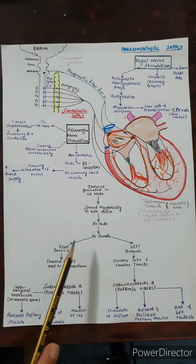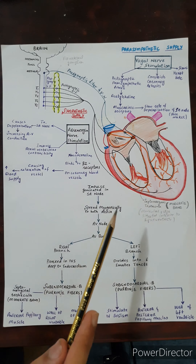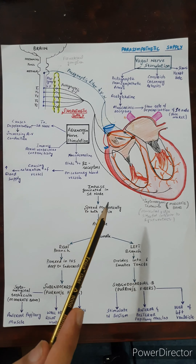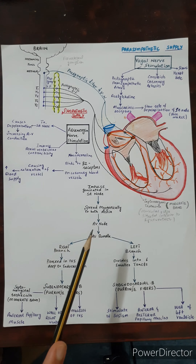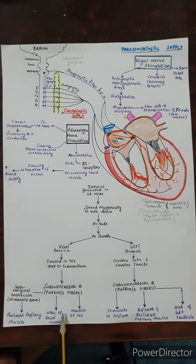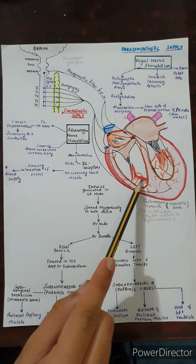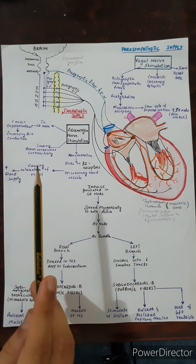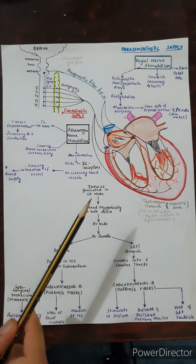The AV bundle divides into two parts: a right branch and a left branch. The right branch proceeds in the interventricular septum deep to the endocardium, which is the innermost layer of the heart. The right branch then gives the Purkinje fibers, also called the subendocardial branches. These fibers supply the wall of the right ventricle, the muscle of the interventricular septum, and the anterior papillary muscle through the septomarginal trabecula, or moderate band. The moderate band is a muscular ridge situated on the anterior interior side of the right ventricle.